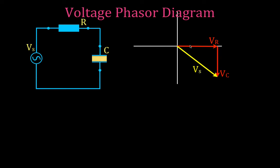We also have this angle phi — the phase angle. This is the angle by which the current leads the voltage in an RC circuit. For resistive circuits, voltage and current are in phase; for purely capacitive circuits they're out of phase by 90 degrees. Therefore in an RC circuit the voltage still lags the current, but it's somewhere between 0 and 90 degrees.